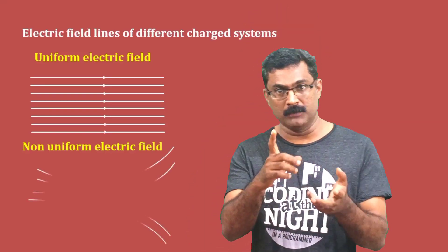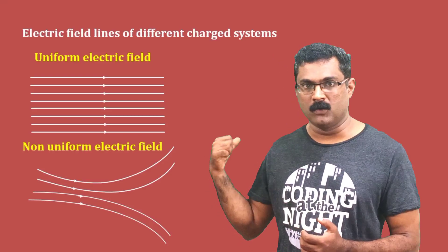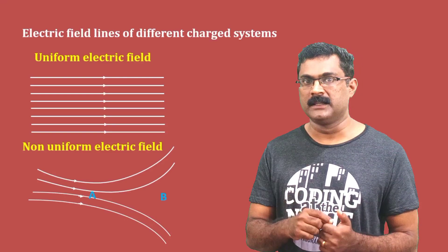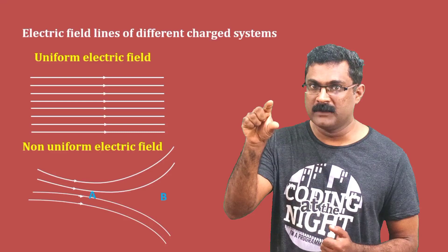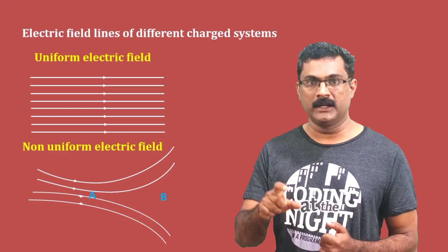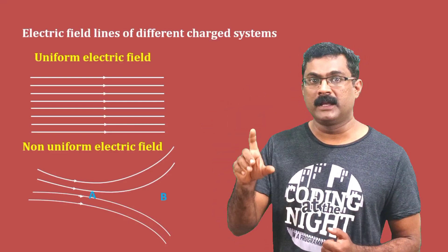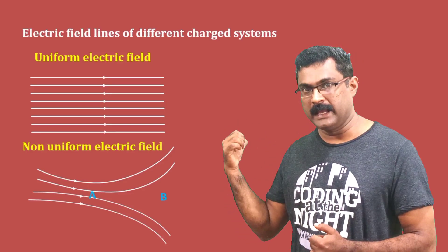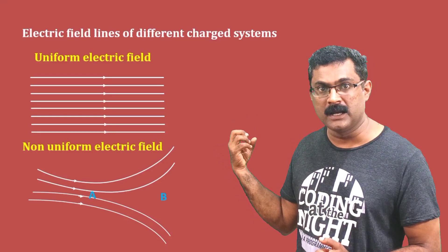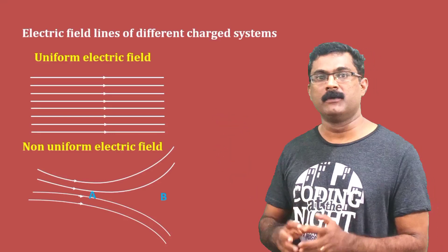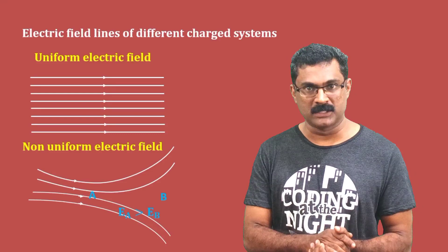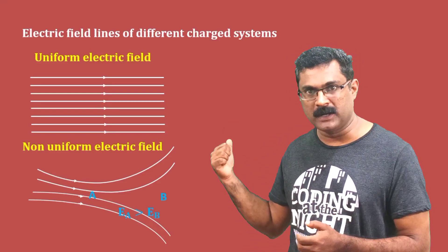Now we have two points, A and B. You can see which point has a stronger electric field. The field lines are crowded at A and less crowded at B. Since A is more crowded, the strength of the electric field at A is greater than at B.